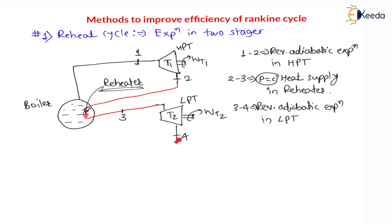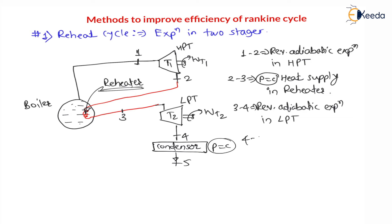Once the expansion is done in the low pressure turbine, heat is rejected in the condenser. There will be a condenser where at constant pressure heat is rejected. So 4 to 5 is constant pressure heat rejection in the condenser.